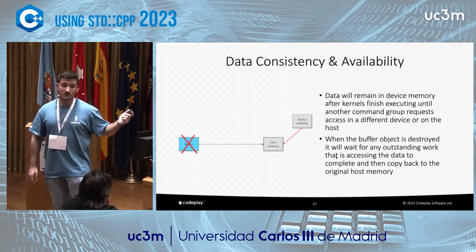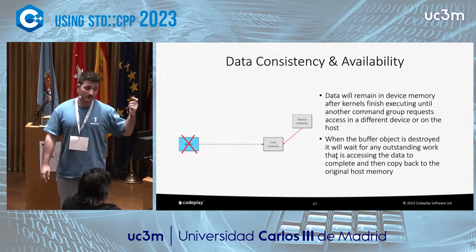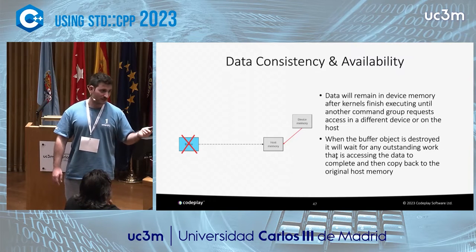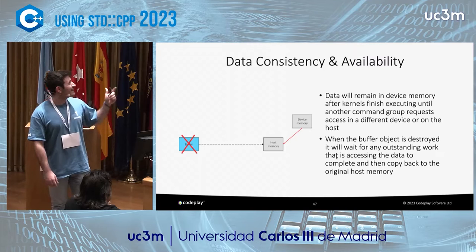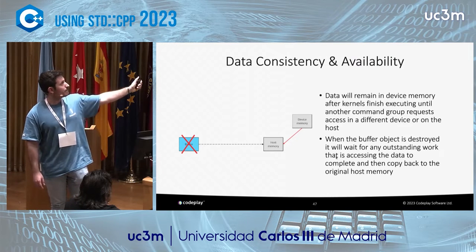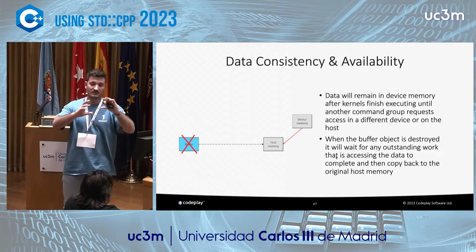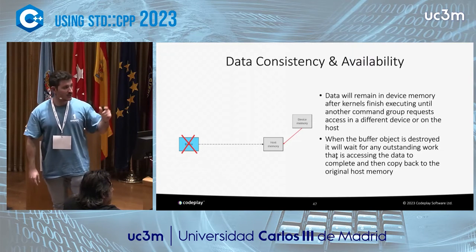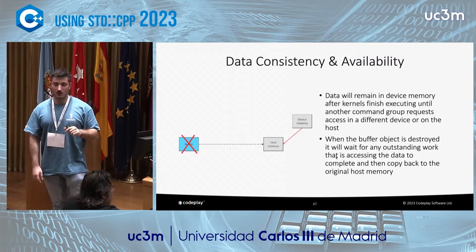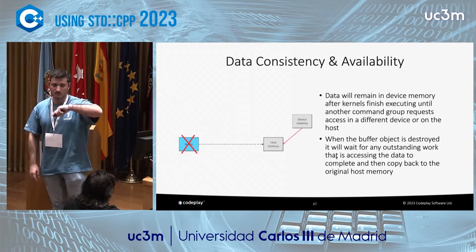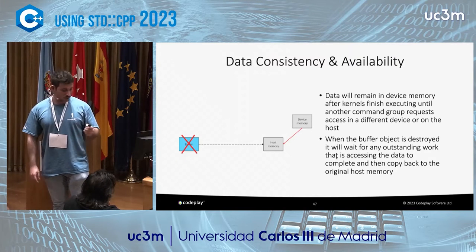The runtime will make sure data is moved and available wherever you need it when you submit your kernels, using buffers and accessors. When a buffer goes out of scope — using RAII — data that was operated on in the device will be copied back into the host. The buffer destructor is blocking until kernels have finished their execution and data is available in the host.